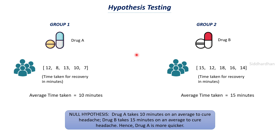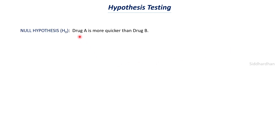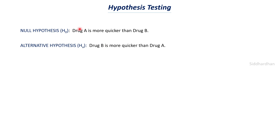A few days later, changes were made to the formula of drug B to make it work better. Now there is an alternative hypothesis stating that drug B is more quicker than drug A. The null hypothesis and alternative hypothesis are opposite to each other: null says drug A is quicker, alternative says drug B is quicker after its improvement. This is where several statistical experiments will be made with more number of people and multiple studies will be carried out to check whether the null hypothesis is true or the alternative hypothesis is true.